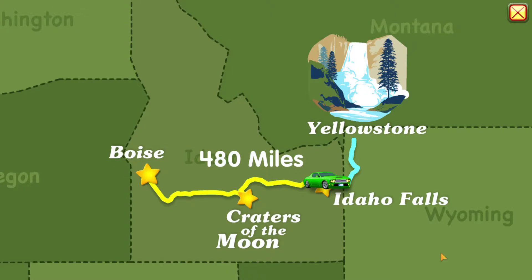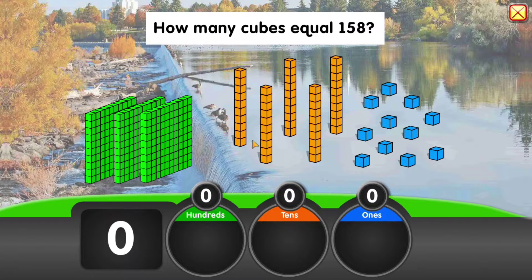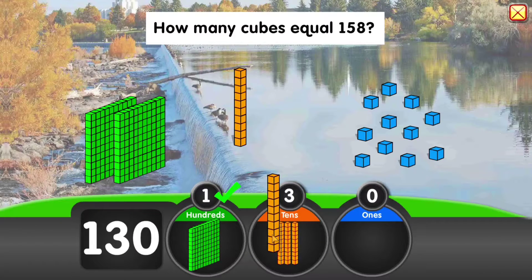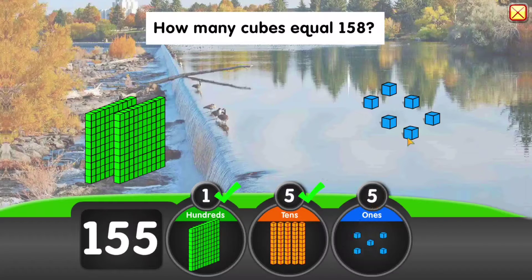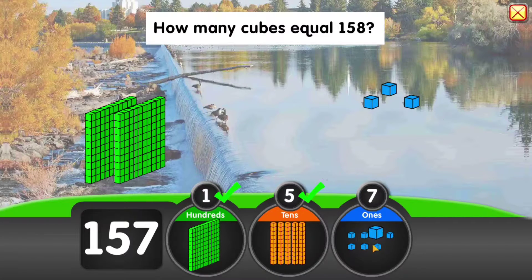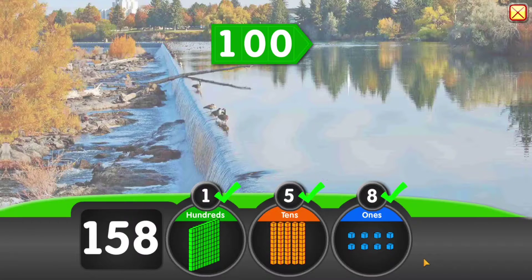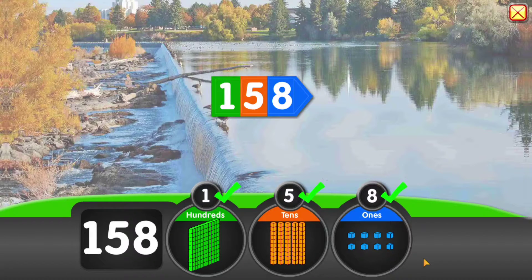Our next stop is 158 miles away. How many cubes equal 158? 100 plus 50 plus 8 equals 158.